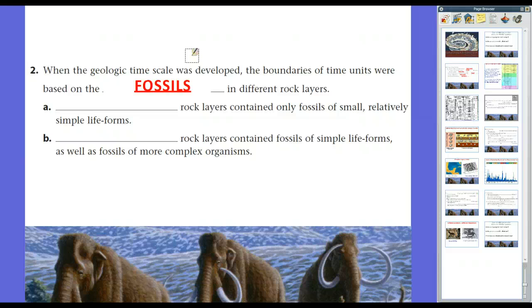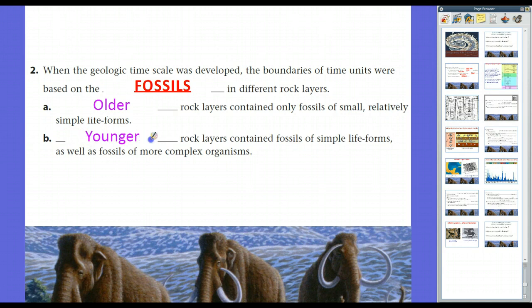The geologic time scale was kind of put together by relative age dating. We knew that the further down you go, the older the rocks are. And only through radiometric dating were we able to come up with absolute ages. Actually, absolute age dating has only been around for about 60, 70 years. So what we know about geologic history in terms of exact ages has only been a relatively recent phenomenon. Like I was just talking about with relative age dating, we found that older rock layers contain only fossils of smaller, relatively simple life forms, and they were at the bottom of the geologic columns.